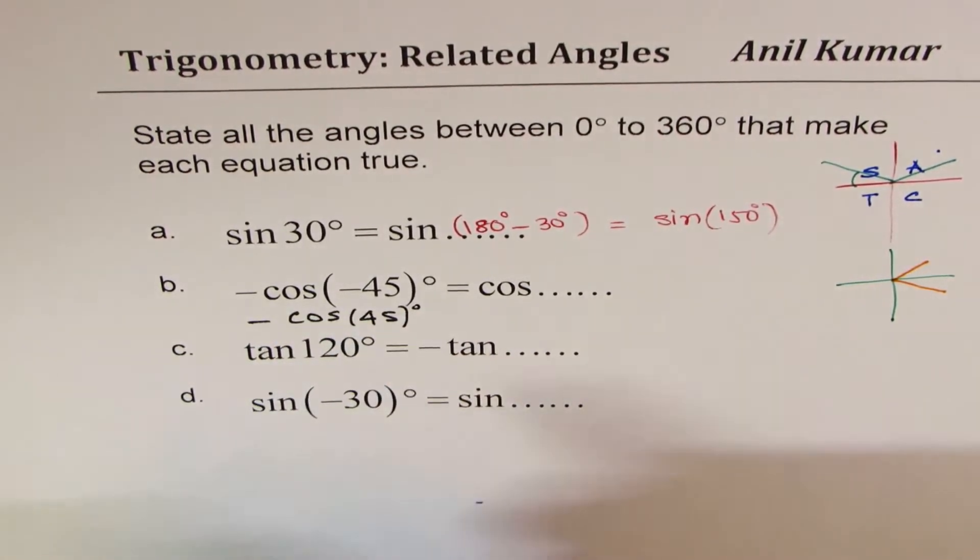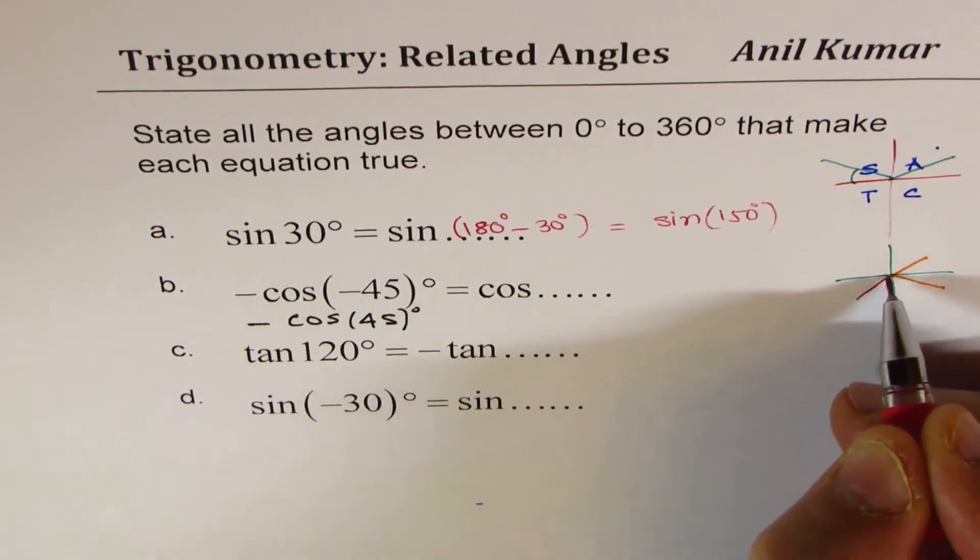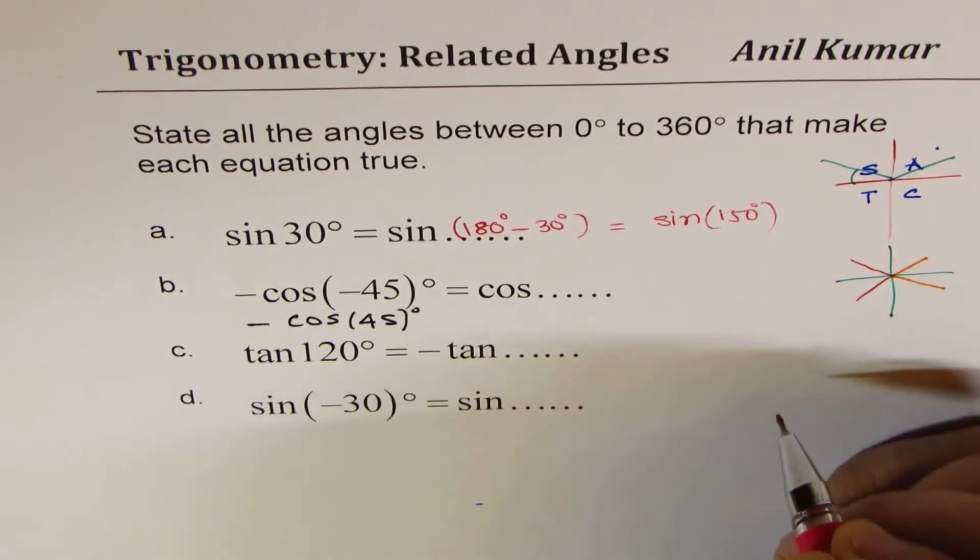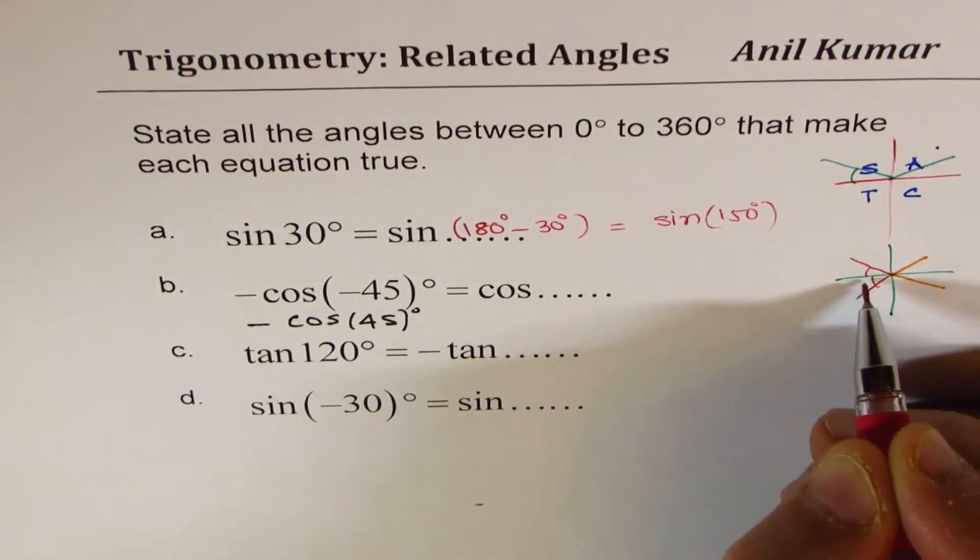We are looking for a negative value. Now cos is negative in which quadrants? In quadrant 3 and 2. So these are the two quadrants. Now in each quadrant, the acute angle is 45.